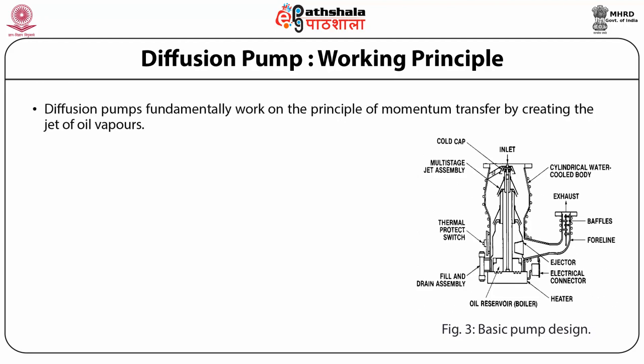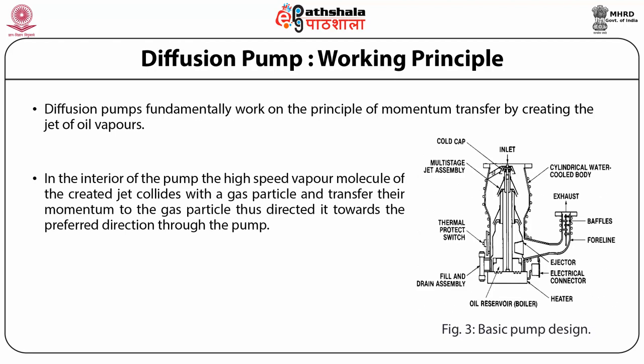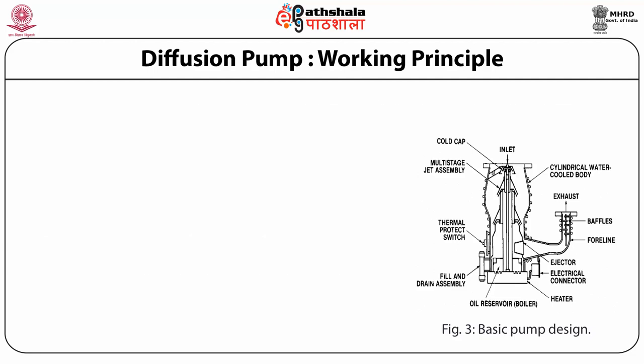Diffusion pumps fundamentally work on the principle of momentum transfer by creating a jet of oil vapors in the interior of the pump. The high speed vapor molecules of the created jet collide with the gas particles and transfer their momentum to the gas particles, thus directing them towards the preferred direction through the pump. The detailed assembly of the diffusion pump is shown in figure 3, which shows the basic pump design. You can see there is an inlet, a cylindrical water-cooled body, an exhaust and oil reservoir, a heater to provide heat, an ejector, a thermal protect switch and a multi-stage jet assembly.